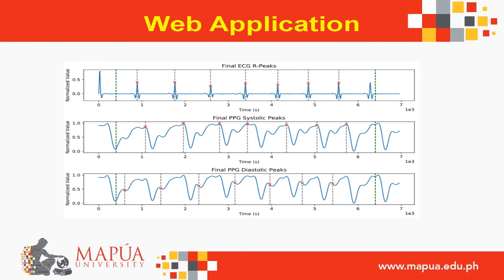As part of the web application, the determination of the needed parameters is shown. On the top is the processed ECG signal along with its detected R-peaks, while the bottom two show the processed PPG signals. The systolic and diastolic peaks of the PPG signals are detected. The PPG systolic peaks are detected and marked, while the PPG diastolic peaks are also marked. All the values of the signals are normalized and a time frame is set wherein the detected peaks are evaluated. The R-peak and systolic peak time is used in the calculation of systolic blood pressure, while the R-peak and diastolic peak time is used in the calculation of diastolic blood pressure.